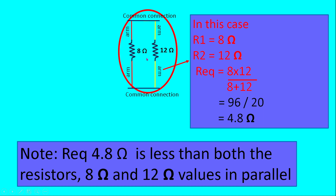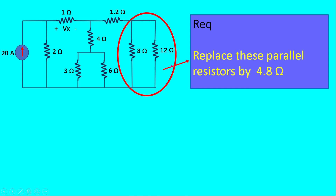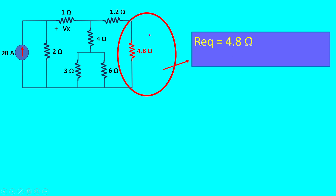In our problem, the 8 ohm and 12 ohm resistances are connected in parallel — they share a common connection on both sides. So we find R equivalent as 8 × 12 divided by 8 + 12, which equals 96 divided by 20, giving 4.8 ohms. We can notice that 4.8 ohms is less than both 8 ohms and 12 ohms, as expected. These two resistances are replaced by this single 4.8 ohm equivalent.